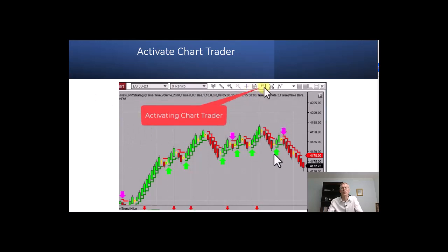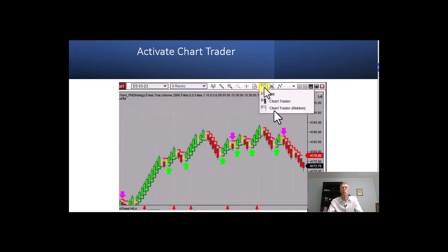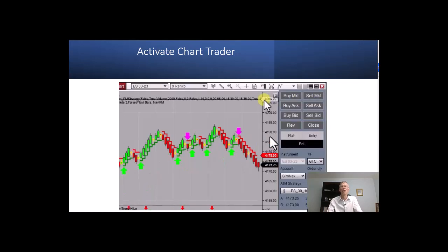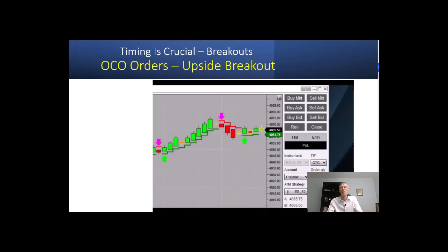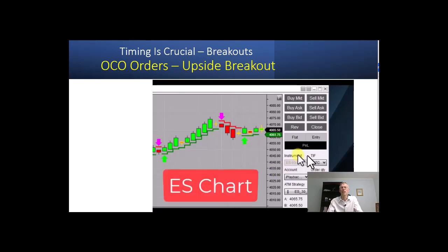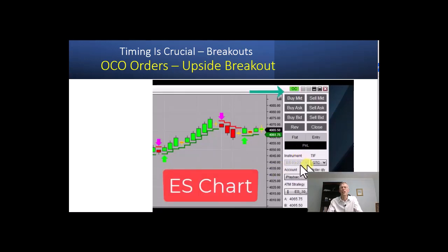The first thing you want to do from the NinjaTrader chart in the upper toolbar, click on the ChartTrader icon. Once you've done that, on the right side of your screen — the ChartTrader interface — right click and put a check mark next to OCO Order.